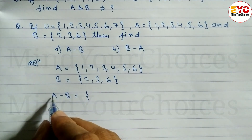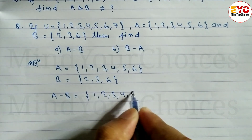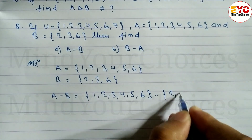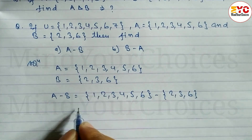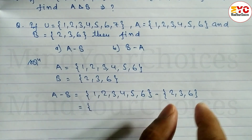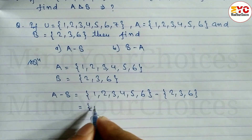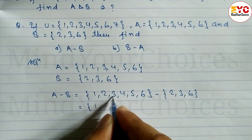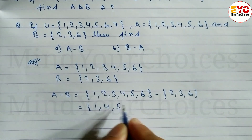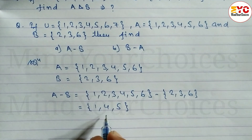Find the difference between A and B. Set A = {1, 2, 3, 4, 5, 6} minus set B = {2, 3, 6}. We subtract set B, so the elements remaining in set A are the answer. 1 is not in B so we write 1. 2 cancels. 3 cancels. 4 is in A but not in B, so we write 4. 5 is in A but not in B, so we write 5. 6 cancels. So A minus B = {1, 4, 5}.